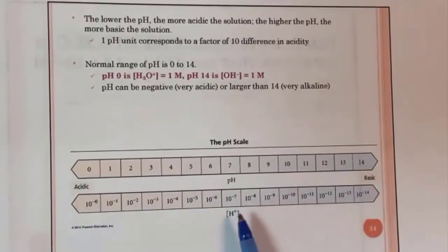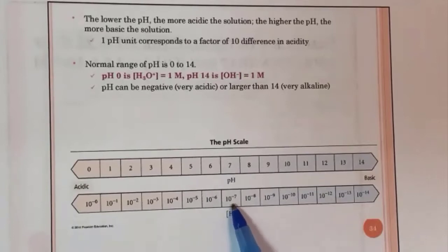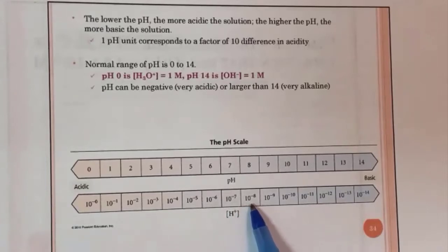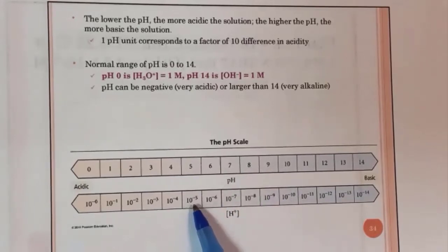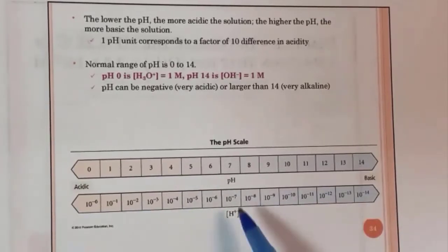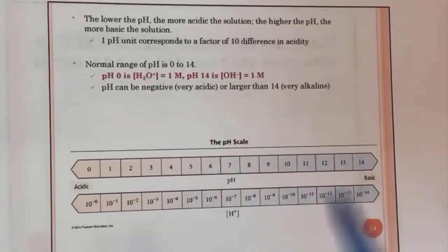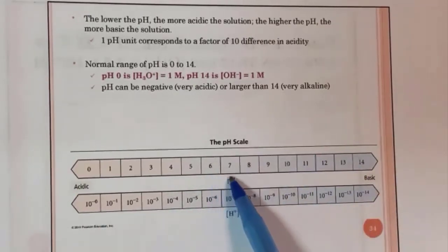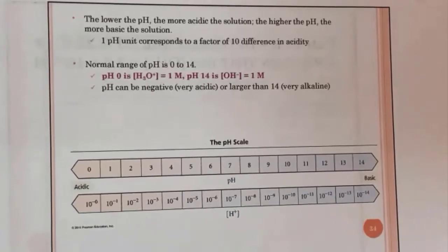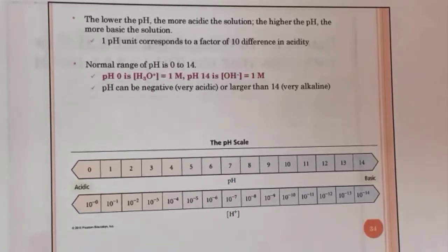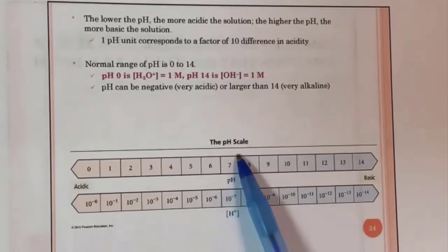The pH scale goes from 0 to 14. At 7, your concentration is 1.0×10⁻⁷ for hydronium ion concentration. As H⁺ gets smaller, like 1.0×10⁻⁸, you get pH 8. If H⁺ is bigger, like 1.0×10⁻⁵, you get pH 5. No one told you pH 7 for neutral is only true at room temperature before this — it slightly changes when you change the temperature.